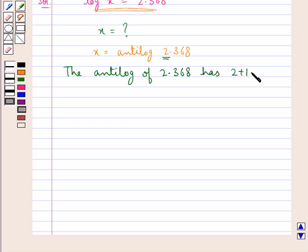2 plus 1 equals 3 digits in its integral part. That is, there would be 3 digits before the decimal point.